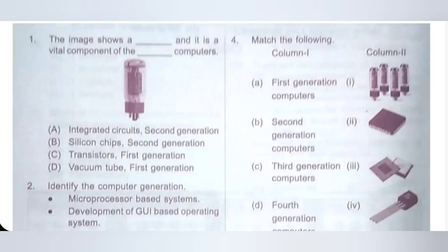First question: The image shows a dash and it is a vital component of dash computers. Options: A. Integrated circuit, 2nd generation; B. Silicon chips, 2nd generation; C. Transistors, 1st generation; D. Vacuum tube, 1st generation. The given image is a vacuum tube. Vacuum tubes are used in 1st generation computers. So option D is the correct answer.